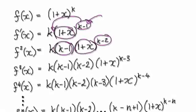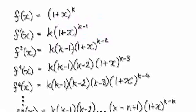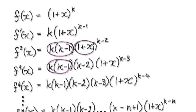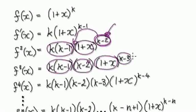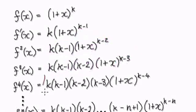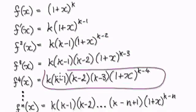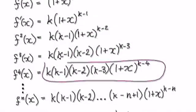The bracket stays intact. Differentiate it again — this term comes down and the power gets minus by 1, giving you the third derivative. Differentiate it again to get the fourth derivative. So now take it to the nth term.